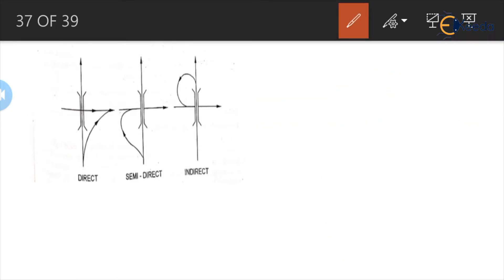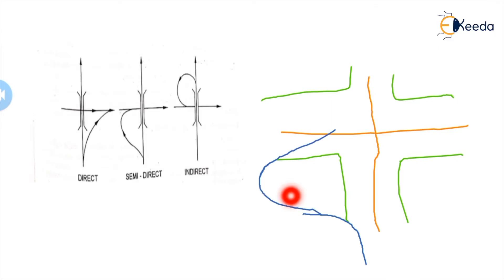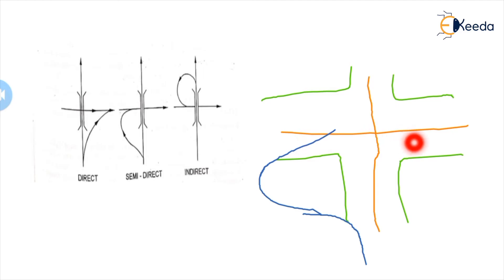For the semi-direct ramp, the vehicle goes from the left side — it allows deviation from the left side but arrival is on the right side. This means it has avoided the conflict from one direction of traffic but not from the other. So in semi-direct, as compared to direct, there is one conflict less.